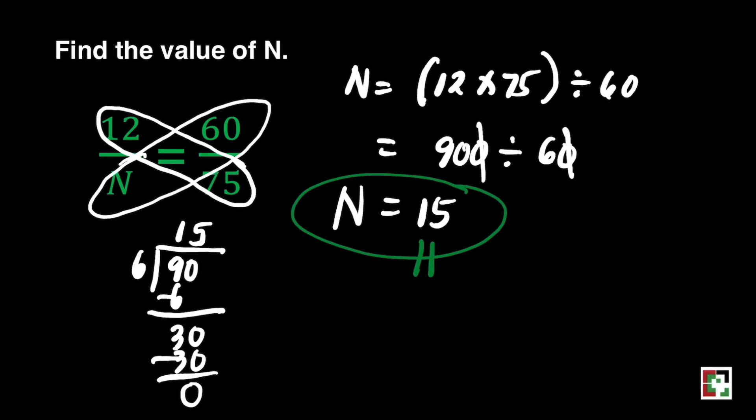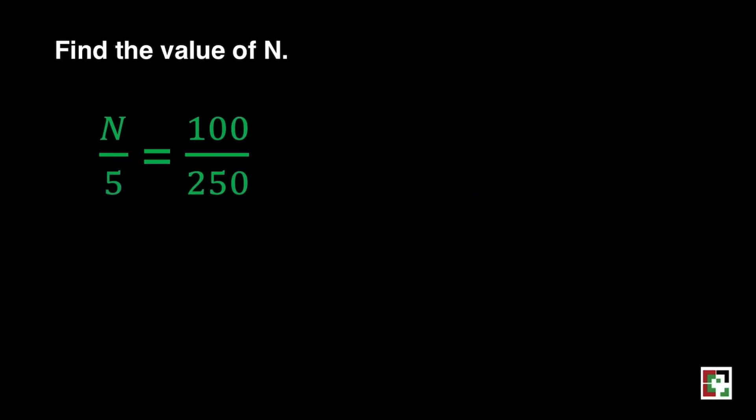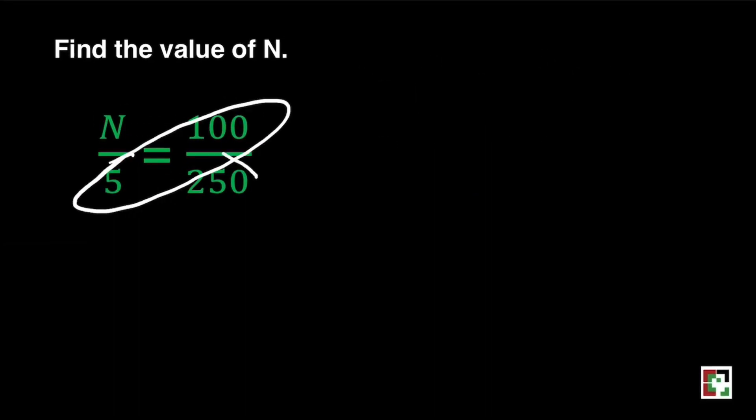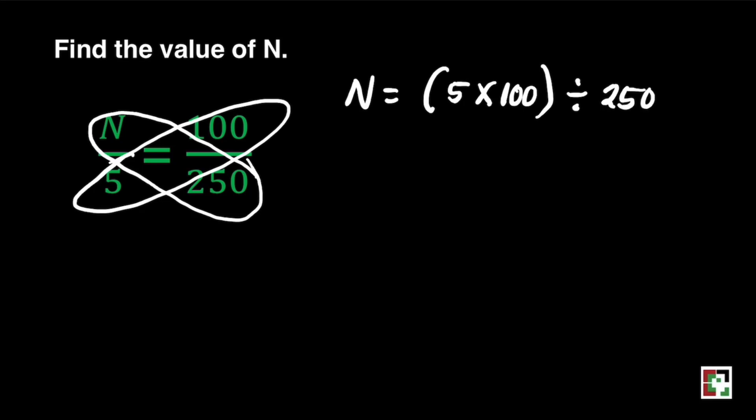Let's have the next one. We have here n over 5 equals 100 over 250. Let's have cross multiplication. That's 5 times 100 divided by 250.